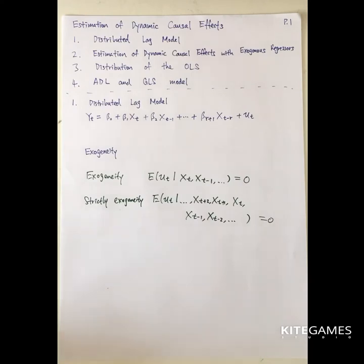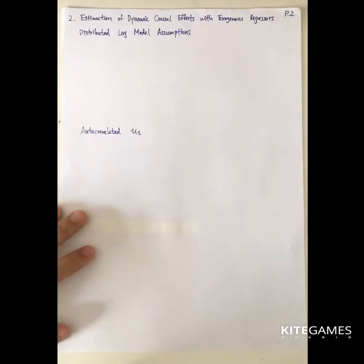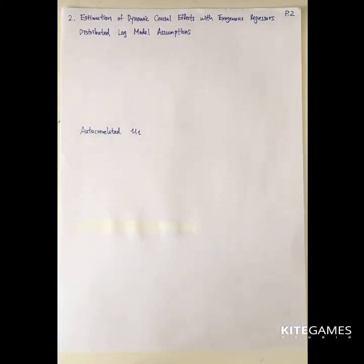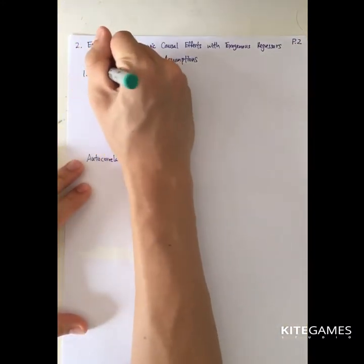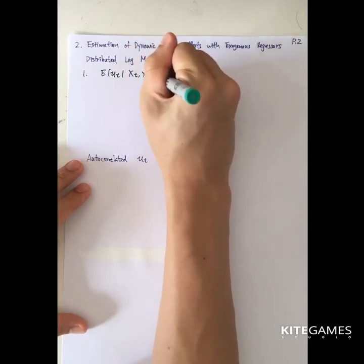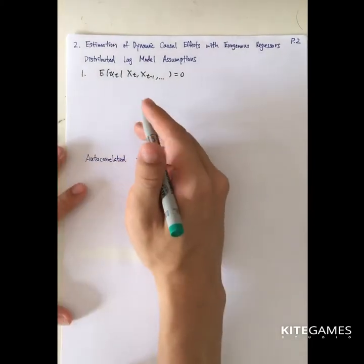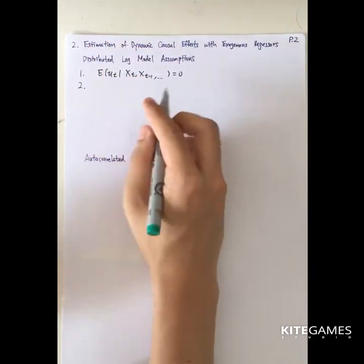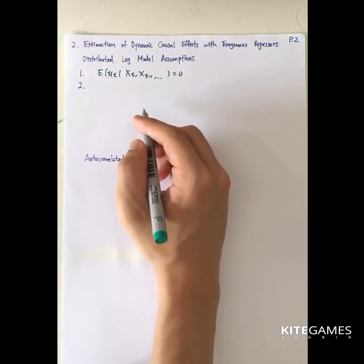Next, we will talk about the estimation of the dynamic causal effect. Before we go to the estimation of the distributed lag model, we need to make some assumptions. The first assumption is that the expected value of the error term, given xt, xt-1, up to all observations, is zero. So we assume exogeneity, but not strict exogeneity. We will take a look at the strictly exogenous assumptions in part 4.